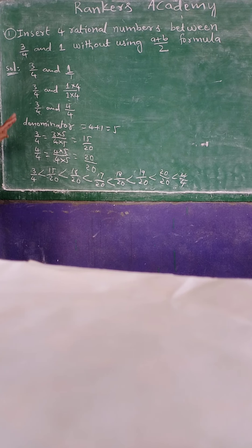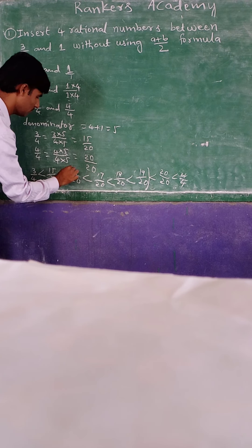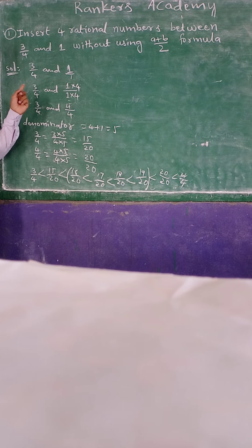So how many rational numbers we have to find, 4 rational numbers. So we have how many rational numbers, 1, 2, 3, 4. This is without using A plus B by 2.